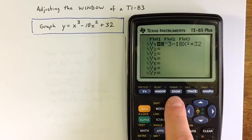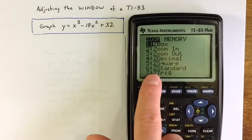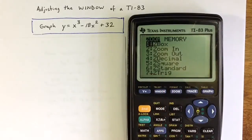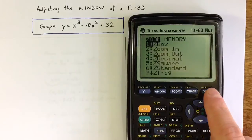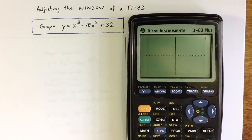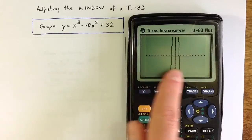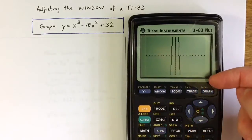A good place to start when you want to graph something on a graphing calculator is with the standard window, option 6 in the zoom menu. And if I choose that option, it sets up the window so that the x values go from negative 10 to 10 and the y values also go from negative 10 to 10.